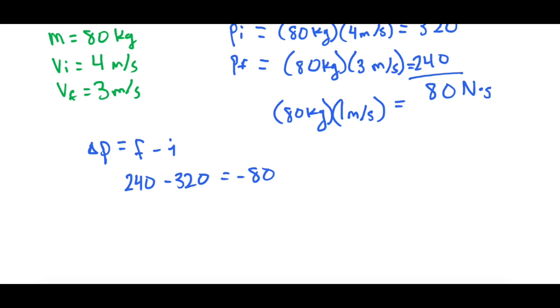So we're saying that our impulse is equal to negative 80 newton seconds. And that makes sense because the sled is slowing down, so we're losing that from the system.